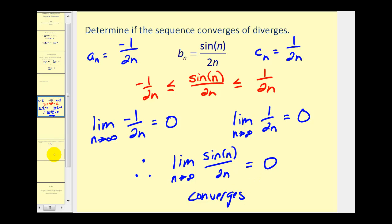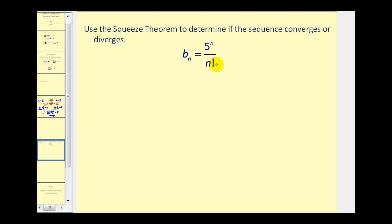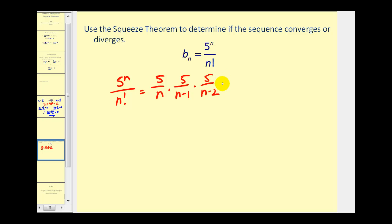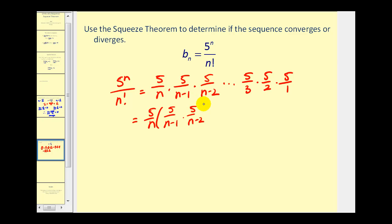Let's take a look at one that's a little more challenging. Here we have b sub n is equal to 5 to the power of n divided by n factorial. As n approaches infinity, it may be unclear as to which is growing faster — the numerator or the denominator. Let's first take a look at the terms generated by this sequence. 5 to the power of n over n factorial would be equal to 5 over n, times 5 over n minus 1, times 5 over n minus 2, and so on, all the way down to 5 over 3, 5 over 2, and 5 over 1. Now let's group some of these terms together — I'm going to rewrite this as 5 over n times all of the factors that would be less than or equal to 1: 5 over n minus 1, 5 over n minus 2, all the way down to 5 over 6, times 5 over 5.